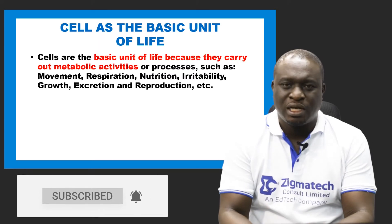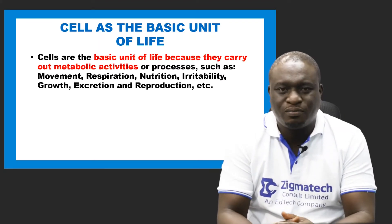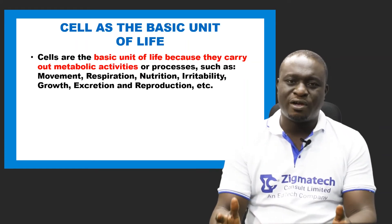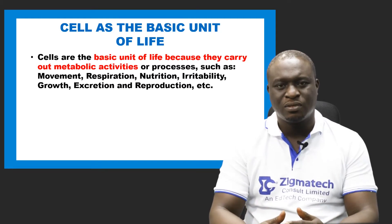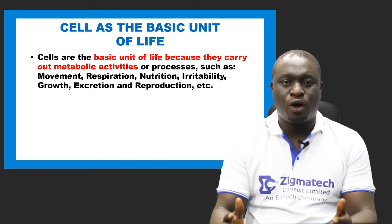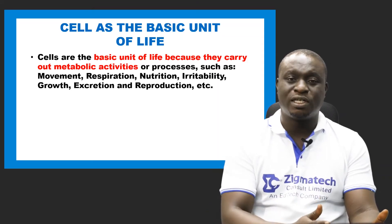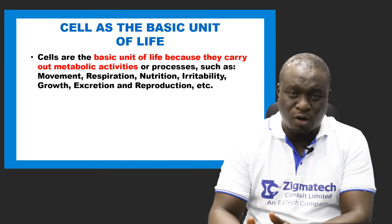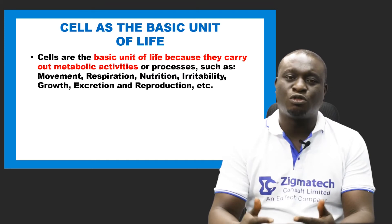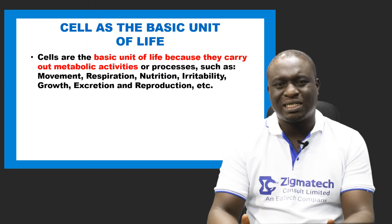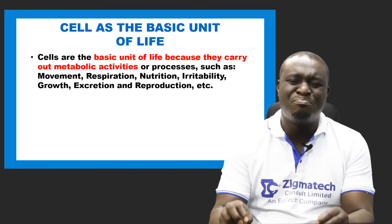Now, why do we call cells the basic unit of life? Cells are referred to as the basic unit of life because they can carry out all life processes or activities — whether unicellular organisms or cells found in multicellular organisms, whether single-celled or many-celled. The cell theory states that there is no life apart from the life of a cell, meaning the cell is actually the smallest and basic unit of life.